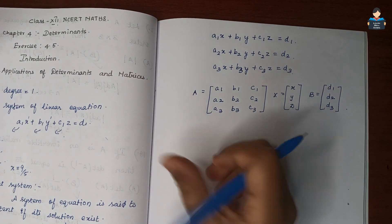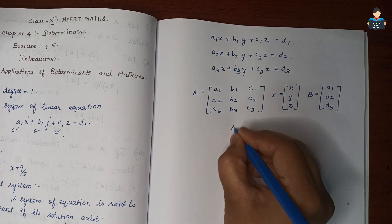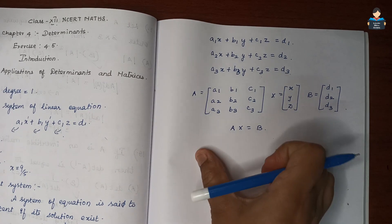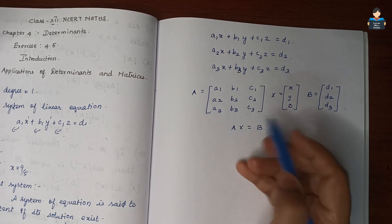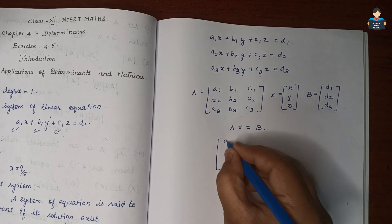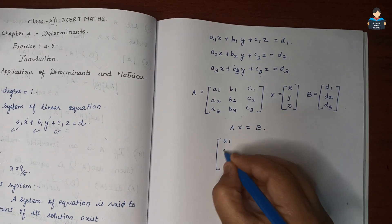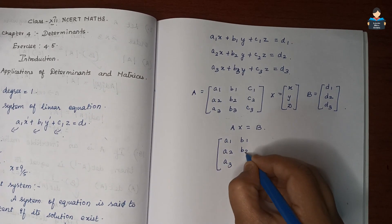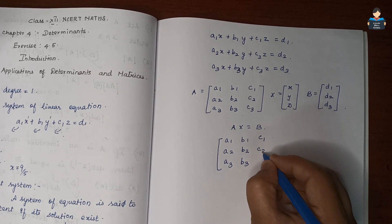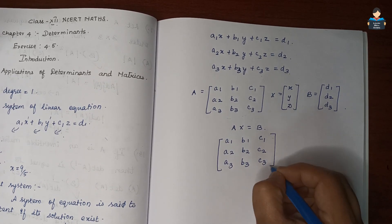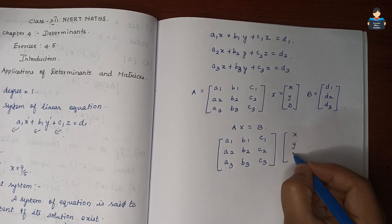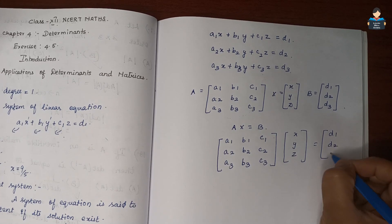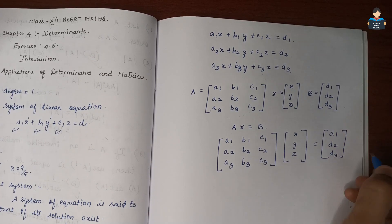So we represent the system of equations in matrix form as AX = B, where A is the coefficient matrix with elements a1, a2, a3, b1, b2, b3, c1, c2, c3, and X is the column matrix of variables x, y, z equal to the column matrix d1, d2, d3.